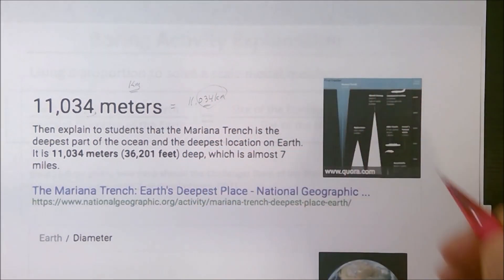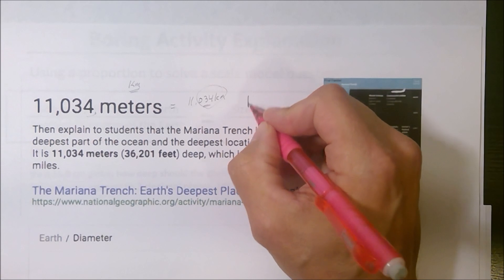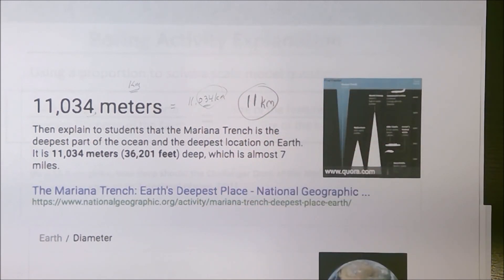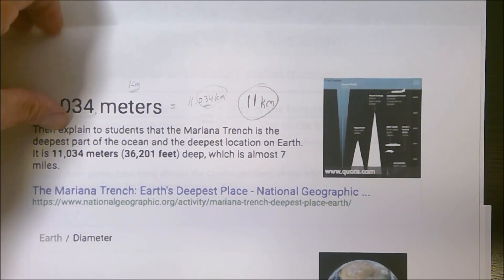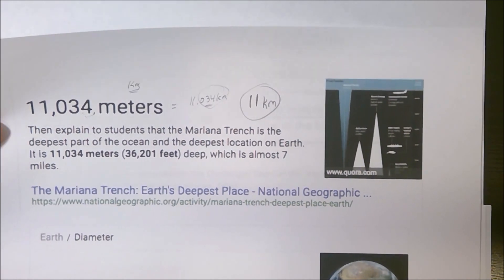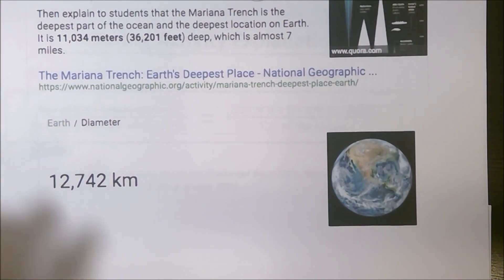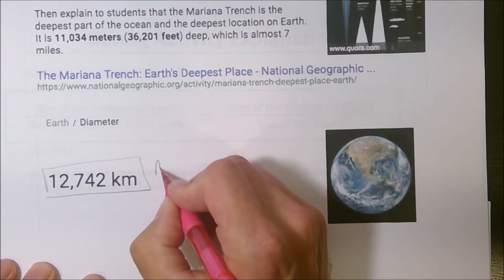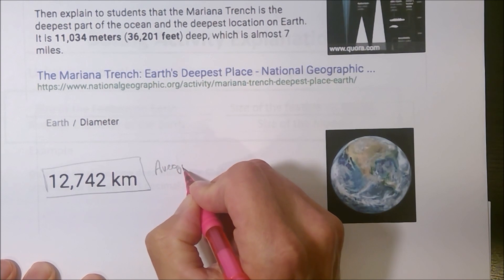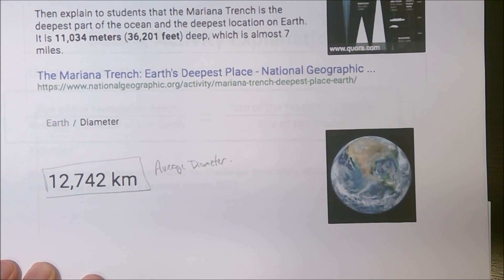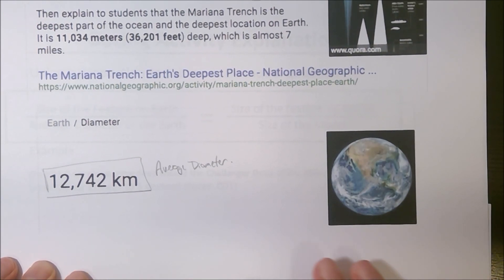Honestly, this isn't incredibly significant in terms of the overall size of the Earth. So we're just going to say that the depth of the Mariana Trench is 11 kilometers. Now, to look at the Earth, we know that on the reference table it gives you the equatorial diameter, but when I looked online, this is the value that I got for the average diameter. Honestly, if you use the equatorial diameter to scale, it probably wouldn't make much of a difference.